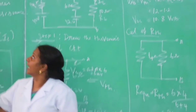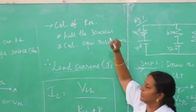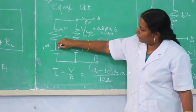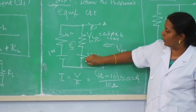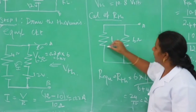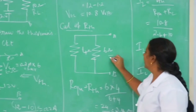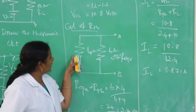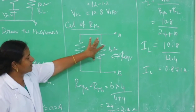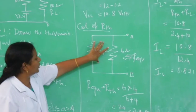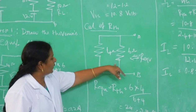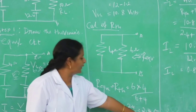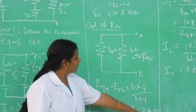The second part is calculation of R TH. For calculation of R TH, step 1 is to kill the sources. Here, there is one voltage source — we have to short the terminal. Another source is the 12 volt voltage source — again we have to short it. Now calculating R equivalent: both resistances are connected in parallel. Using the parallel formula, R TH equals 6 into 4 divided by 6 plus 4, giving us 2.4 Ohm — that is Thevenin's resistance.